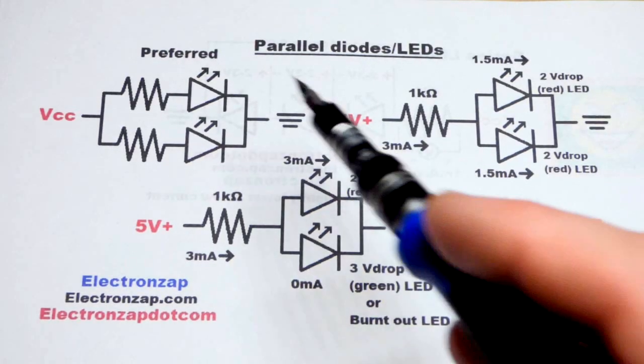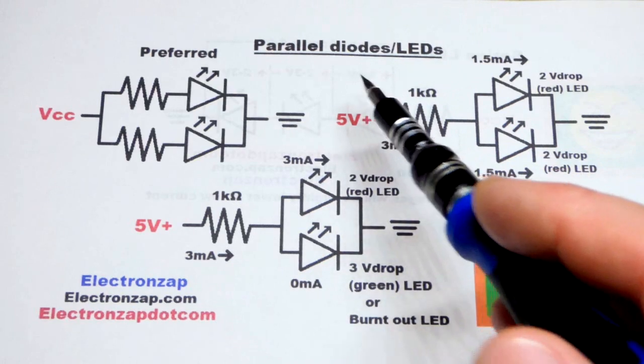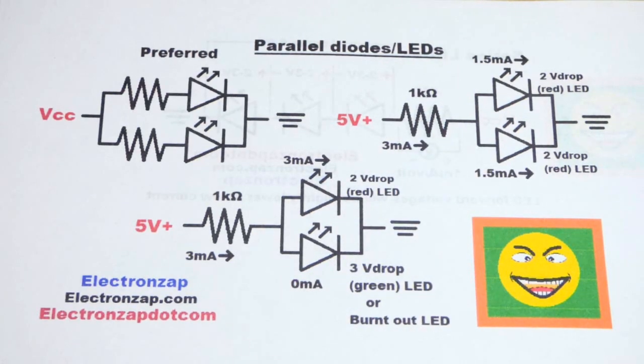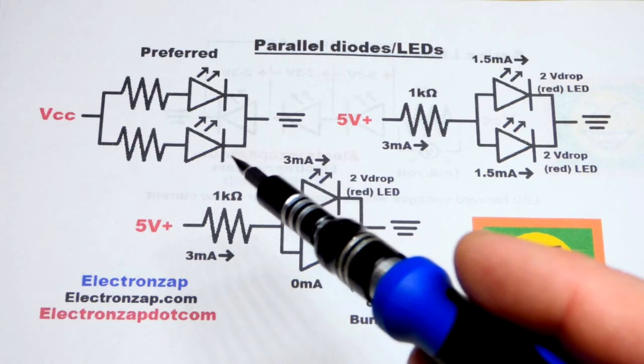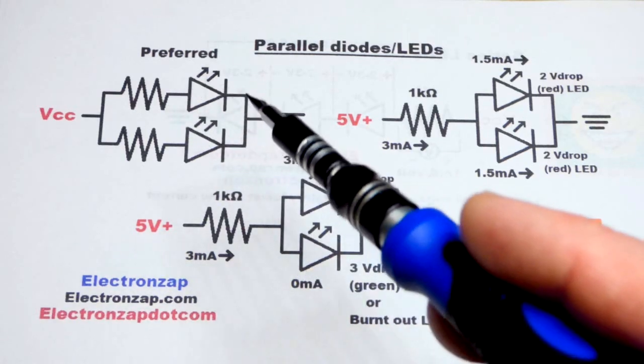So now in this video, we're going to look at parallel LEDs, and the principles we're looking at here apply to other diodes. They have a forward voltage, and there's also Zener diodes where you use them reverse biased, so you look at their reverse voltage.